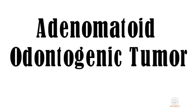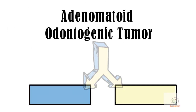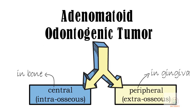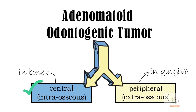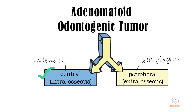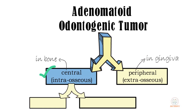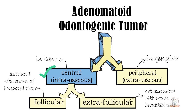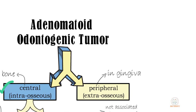AOT can be of two types: central and peripheral, though the majority of cases are central. Further, central AOT can be of two types: follicular and extra-follicular, where the majority are follicular.